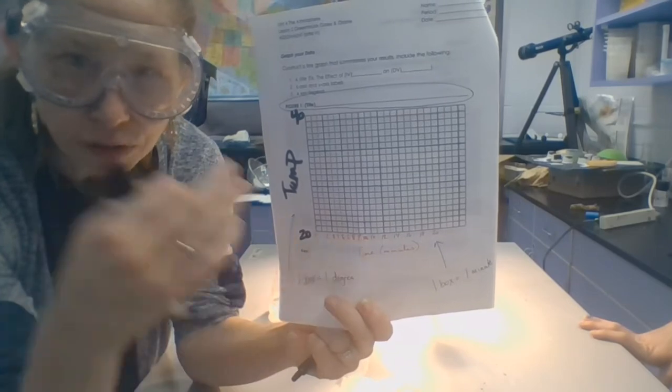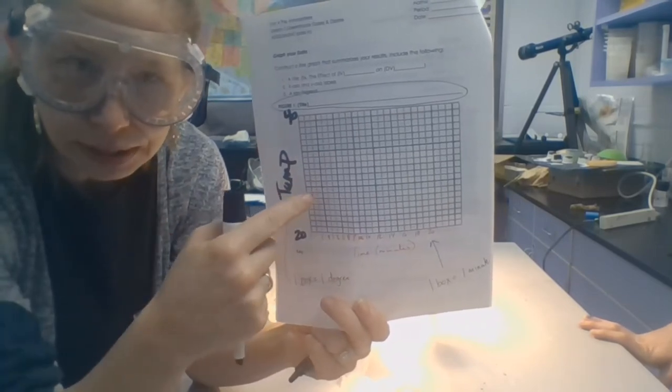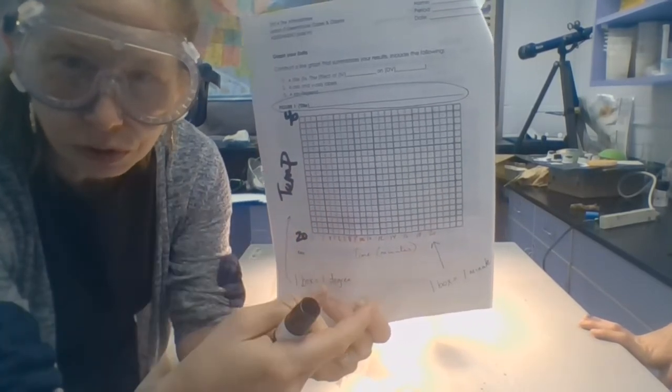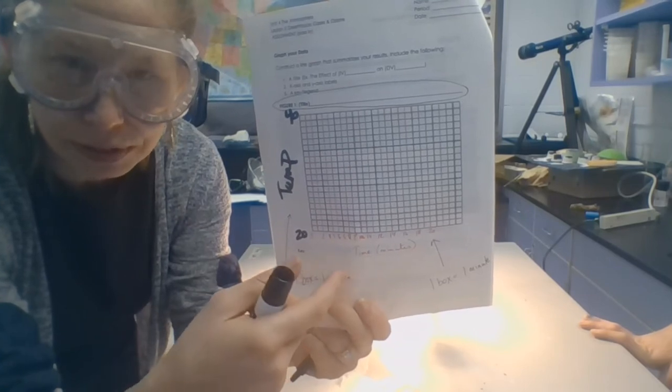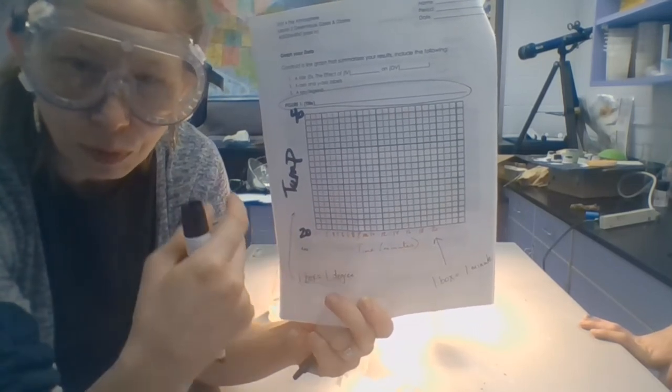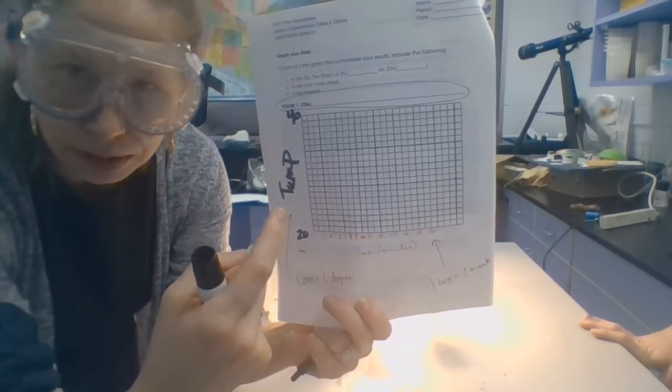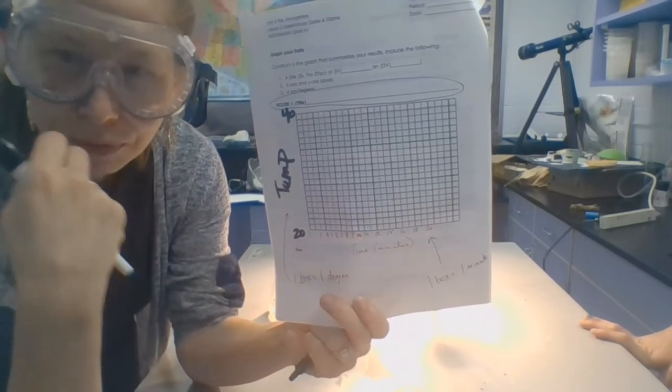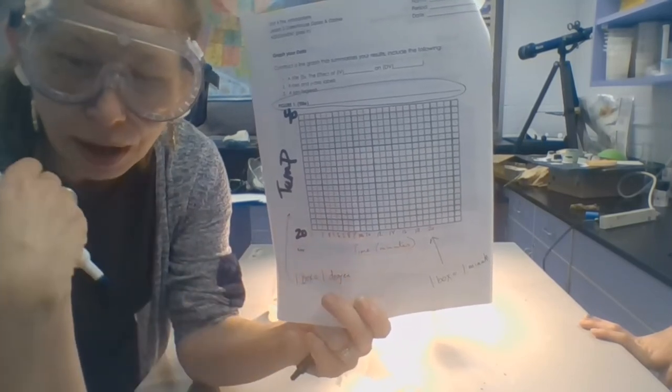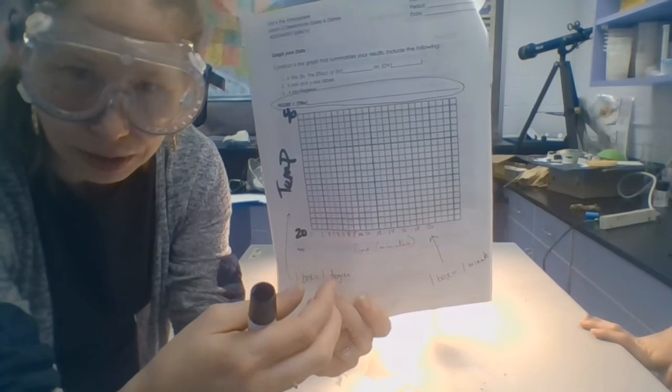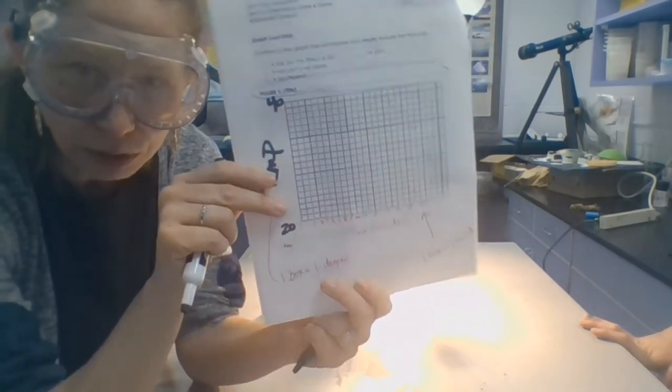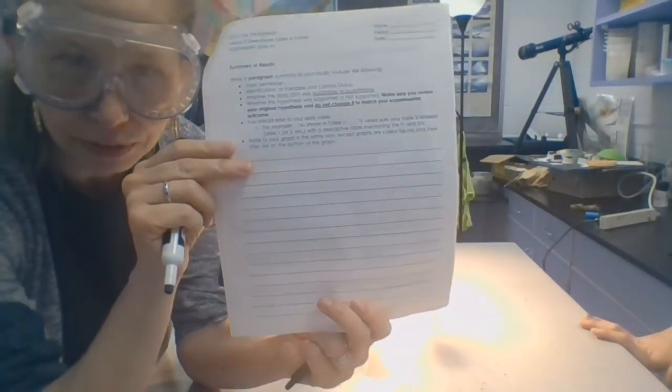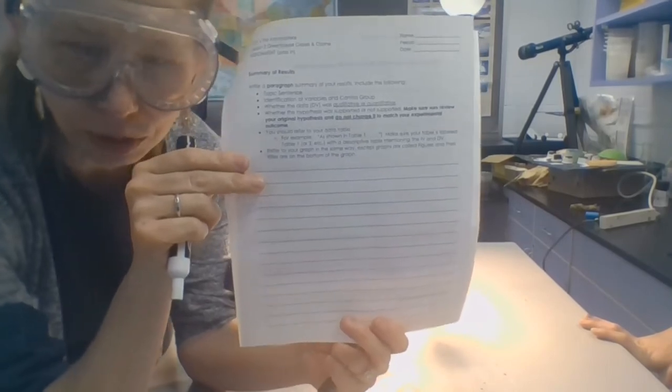Also, don't forget you're making three line graphs on the same graph. So you want to use three different colors for your line graphs. You're going to make one line graph for 0 Alka-Seltzer, the control, one line graph for the 4 Alka-Seltzer, and one line graph for the 8 Alka-Seltzer. Once you finish that, then you can start analyzing your data on the results page and then move on to the conclusion page.